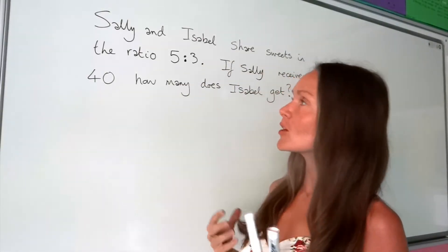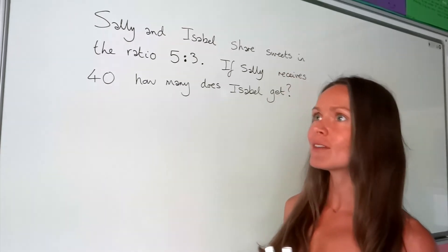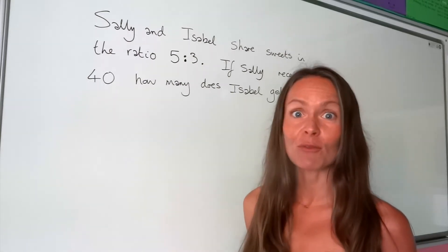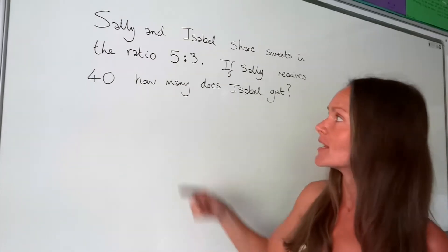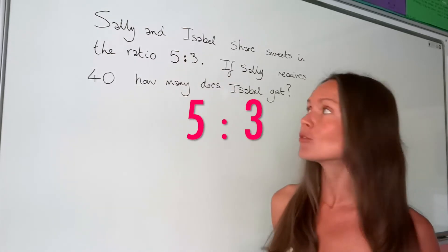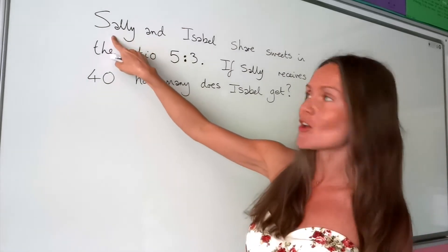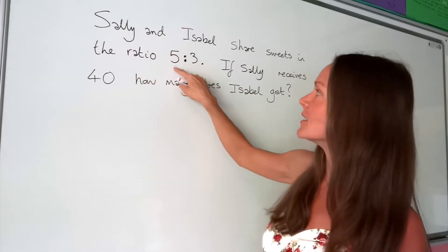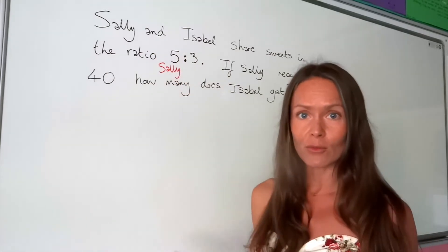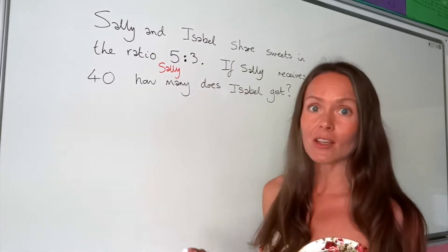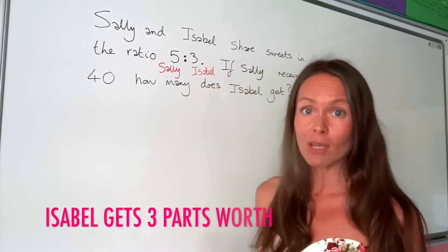In this ratio video I'm going to show you how to work out one of the quantities or the total in a ratio when you're given the other quantity. Here we've got Sally and Isabel and they're sharing sweets in the ratio 5 to 3. Remember the order that their names are written in is important - Sally is written first so this number refers to Sally, meaning Sally receives five parts worth of the overall sweets. Isabel is written second so the second number refers to Isabel, so Isabel receives three parts worth of the sweets.